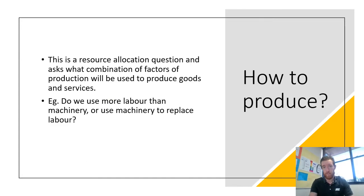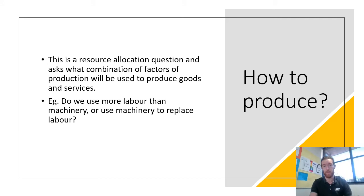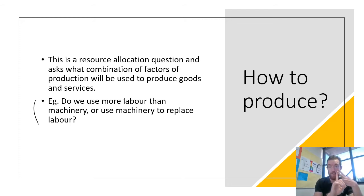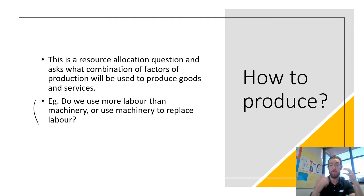The second question is: how to produce. This is all about resource allocation and asks which combination of factors of production will be used to produce goods and services. For example, do we use more labour than machinery, or use machinery to replace labour? Are we going to make things by hand, use machinery, or use a production line? How to produce is very important because it affects your cost of production, your efficiency, and how long it takes to make those goods and services.